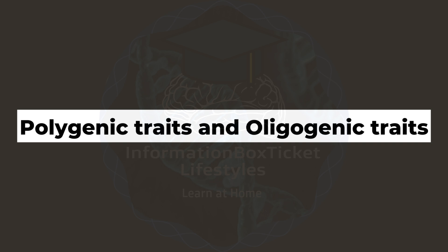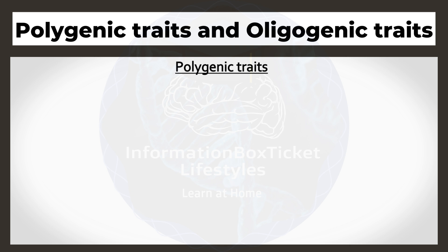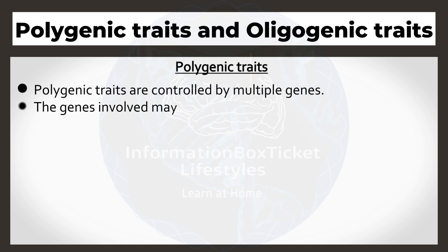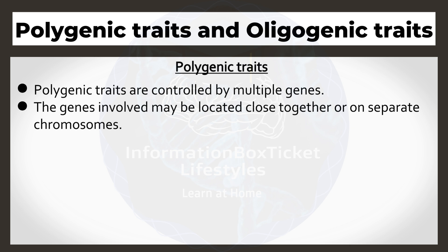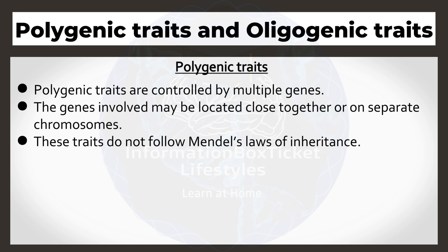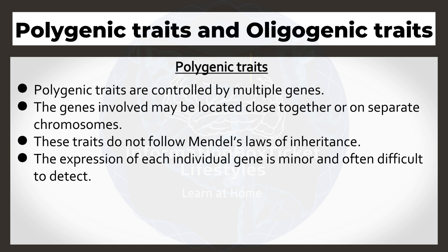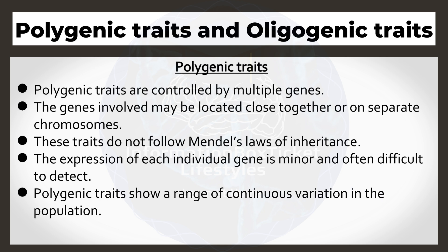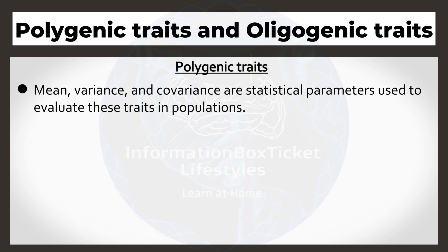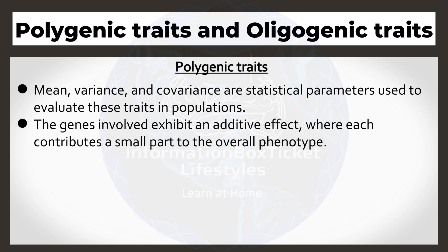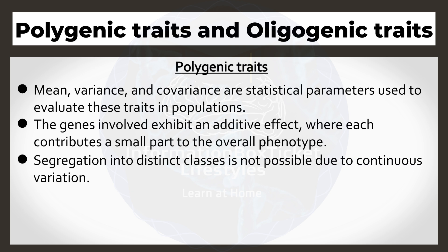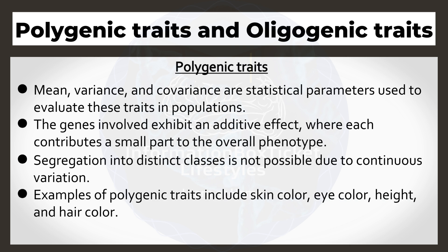Polygenic traits and oligogenic traits. Polygenic traits are controlled by multiple genes. The genes involved may be located close together or on separate chromosomes. These traits do not follow Mendel's laws of inheritance. The expression of each individual gene is minor and often difficult to detect. Polygenic traits show a range of continuous variation in the population. They are significantly influenced by environmental factors. Mean, variance, and covariance are statistical parameters used to evaluate these traits in populations. The genes involved exhibit an additive effect, where each contributes a small part to the overall phenotype. Segregation into distinct classes is not possible due to continuous variation. Examples of polygenic traits include skin color, eye color, height, and hair color.